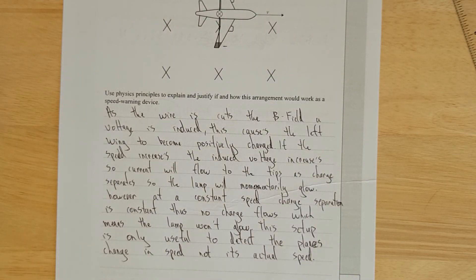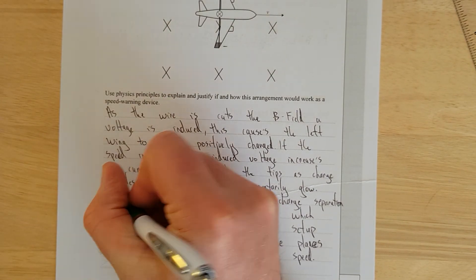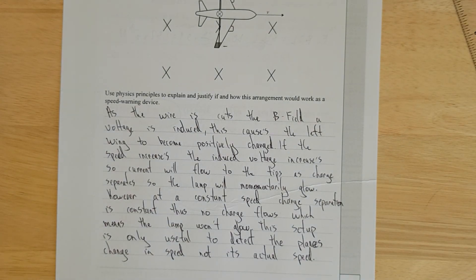As the wire cuts the magnetic field, a voltage is induced. This causes the left wing to become positively charged. If the speed increases, the induced voltage increases. The current will flow to the tips as charge separates, so the lamp will momentarily glow. However, at a constant speed the charge separation is constant. One end is positive, one end is negative. Thus no charge will flow, which means the lamp won't glow. This setup's only useful to detect the plane's change in speed, not its actual speed.